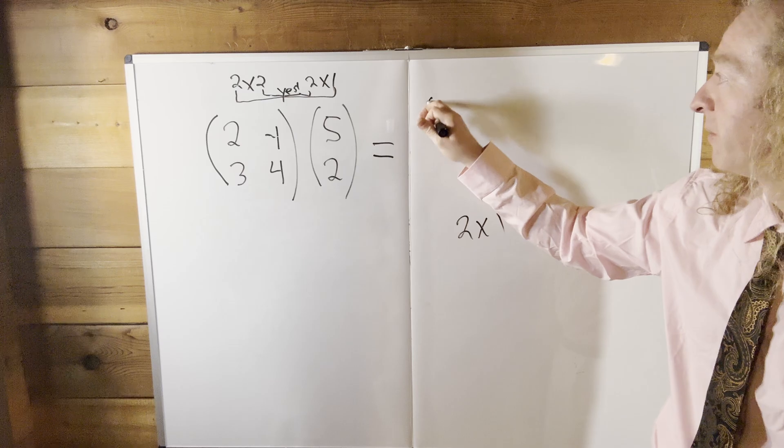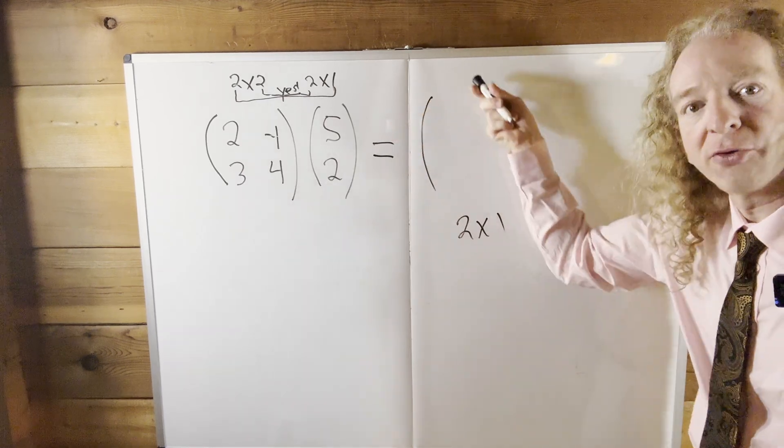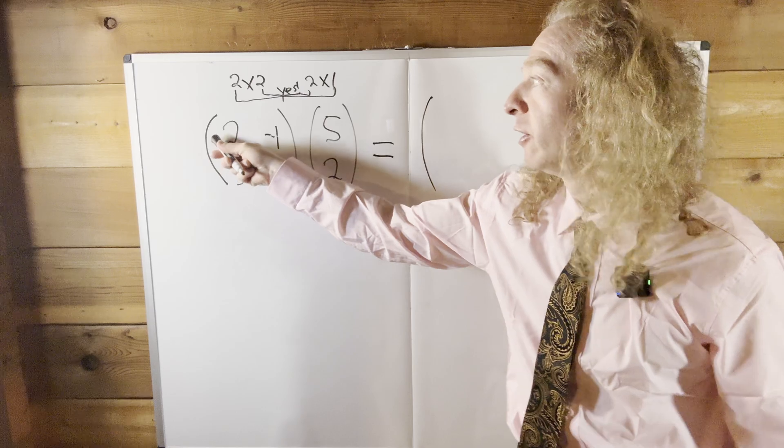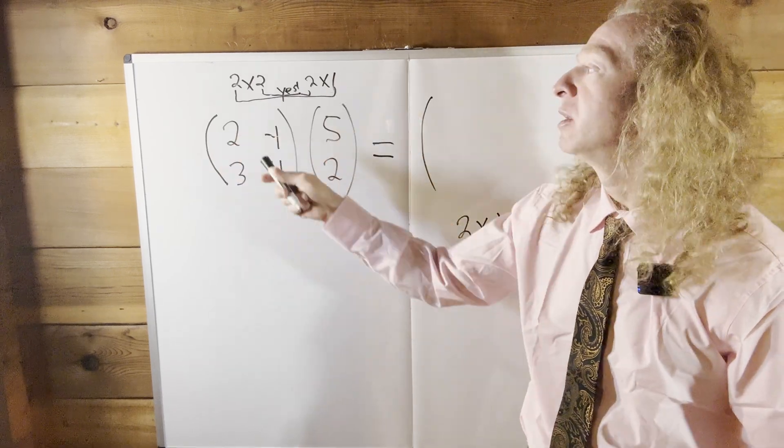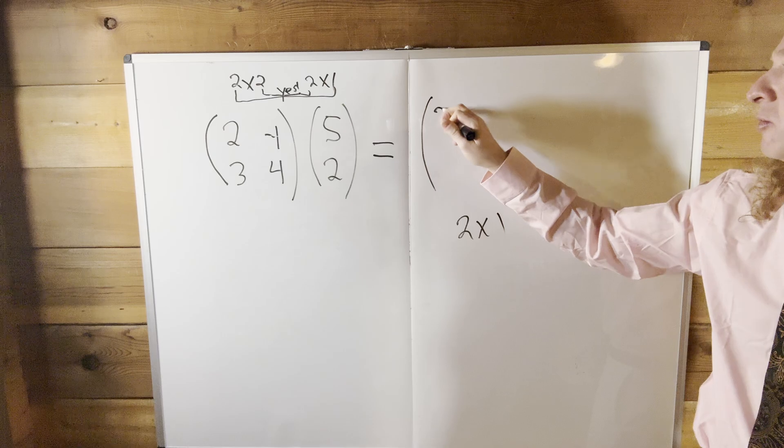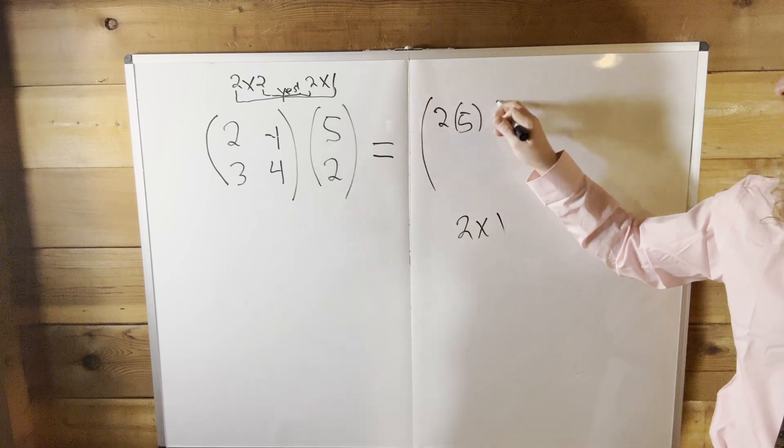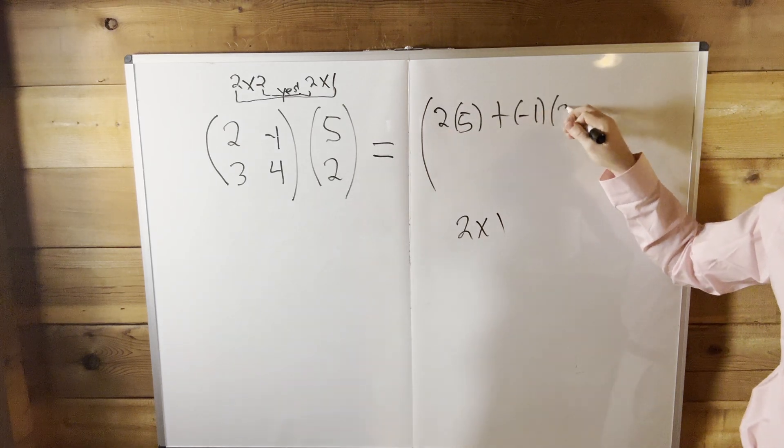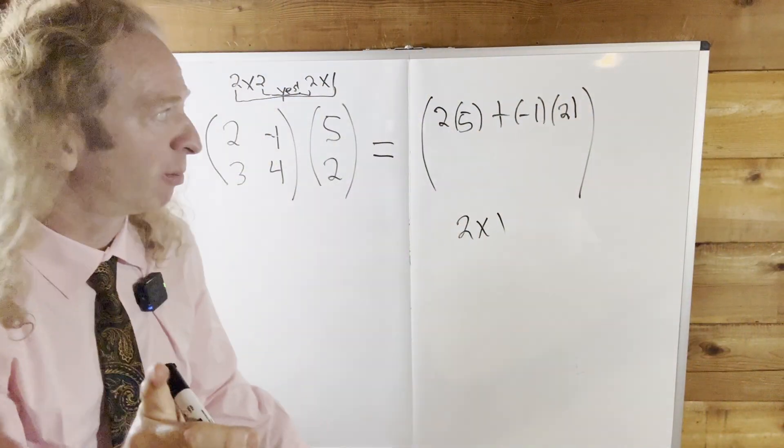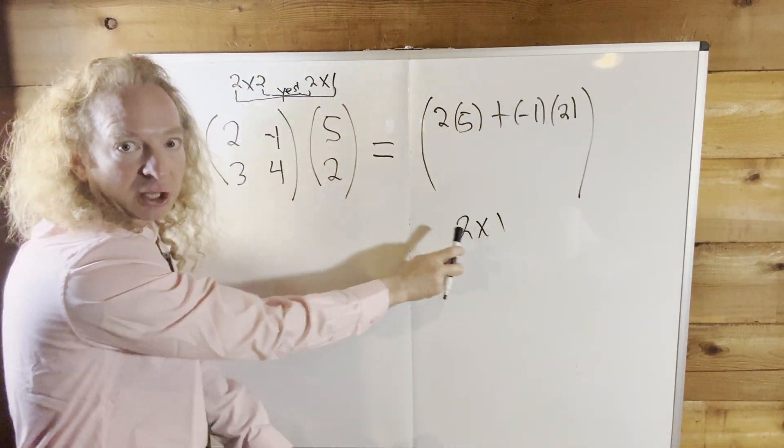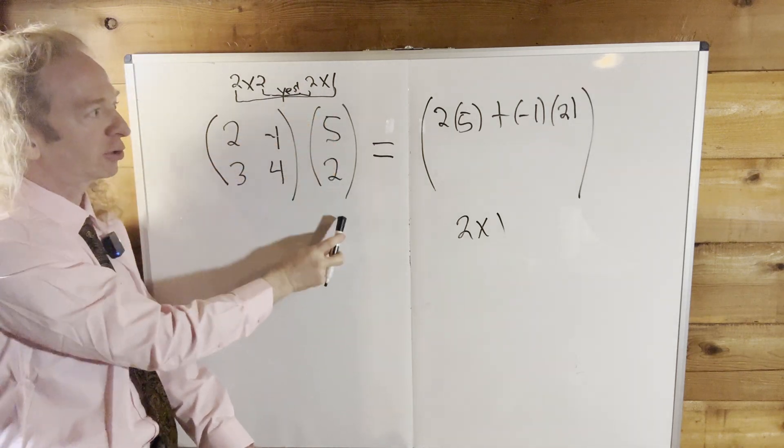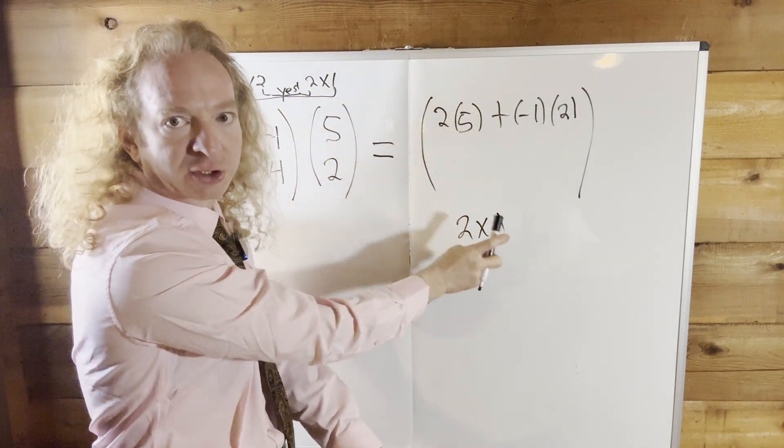So for the first row, first column, we use the first row, first column. So two times five plus negative one times two. Let me go over that again, very key, super important. First row, first column, use the first row, first column.